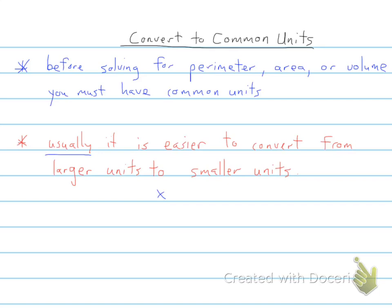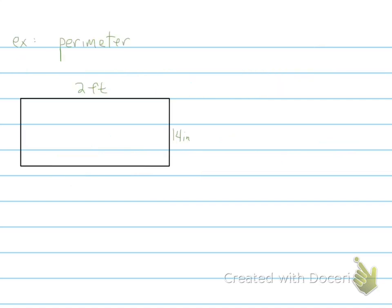All right, so I'll show you what I mean in these examples that I have for you here. So your first one here, we have a perimeter of a rectangle, and one side is 2 feet, the other side is 14 inches.